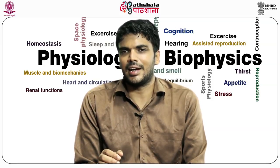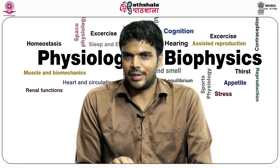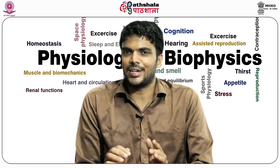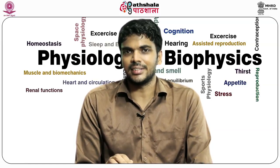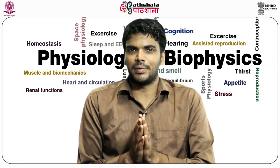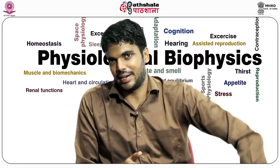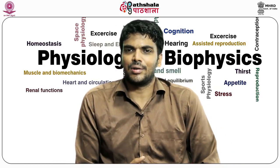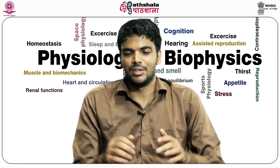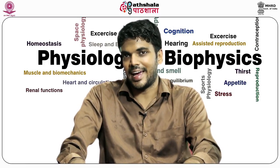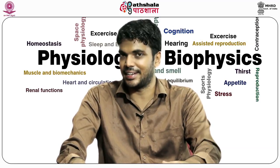The human body is under a set of constraints. There are external constraints in terms of external forces acting on us. On earth, the most common external force is gravity, acting in a vertically downward direction. We are also subject to reaction forces from all surfaces we are in contact with — for example, a table exerts a reaction force against my hand.